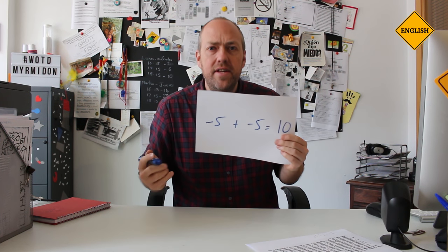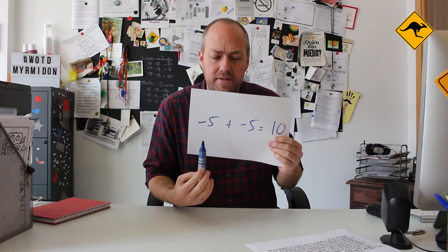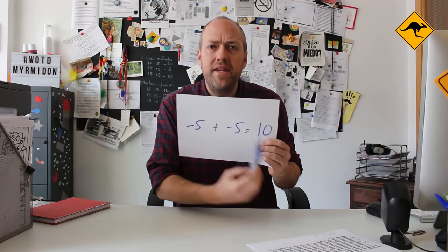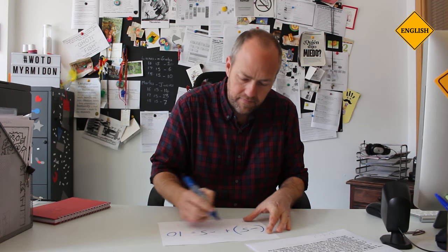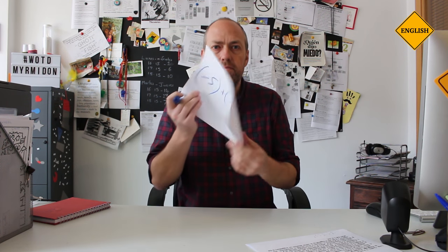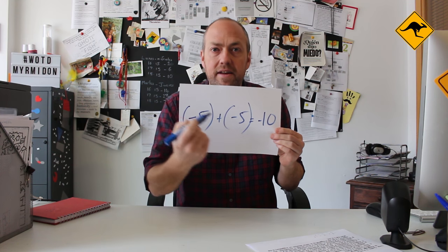Hello and welcome to Kangaroo English, I'm Christian, and today we are going to be talking about the double negative. You've probably heard that the double negative in English is incorrect — that it's similar to mathematics, that if we have a negative plus another negative then it equals a positive.